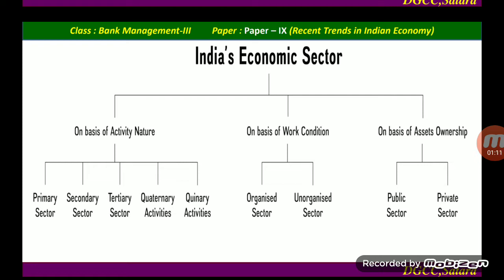There are also quaternary and quinary sectors, each having an important role. Quaternary economic activities include activities such as software development, statistical work, educational and knowledge-based work. The quaternary sector is the part of the economy where top-level decisions are made — for example, government which passes legislation, and top decision makers in industry, commerce, and education.